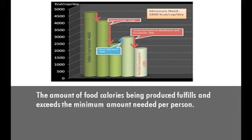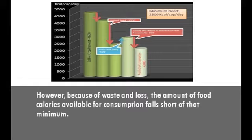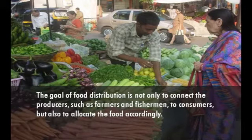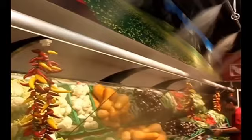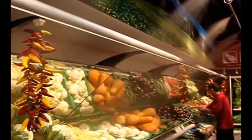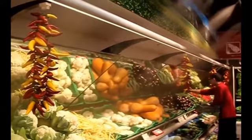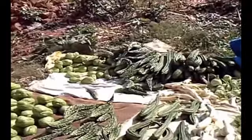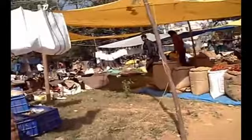However, because of waste and loss, the amount of food calories available for consumption falls short of that minimum. The goal of food distribution is not only to connect the producers — such as farmers and fishermen — to consumers, but also to allocate the food accordingly. Challenges arise in deciding how the food will be distributed among the people who have the power of distribution and what methods should be used. The establishment of markets in which producers directly sell their food to consumers is the most traditional method of distribution.